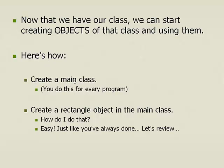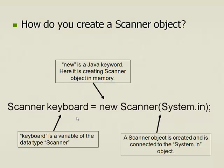Here's how: we first create our main class, and then inside that main class we're going to call the rectangle class and create rectangle objects. You've created objects before — for example, you've created multiple keyboard objects. We say: Scanner keyboard equals new Scanner(System.in). So the scanner object is created and connected to the System.in object. 'new' is a Java keyword — it creates a scanner object in memory. 'keyboard' is the variable of data type Scanner, so keyboard is the name of the object using the scanner class.